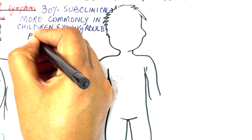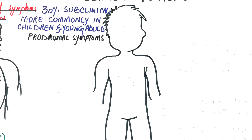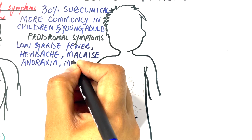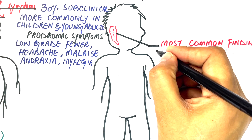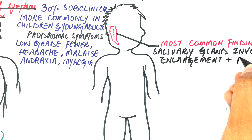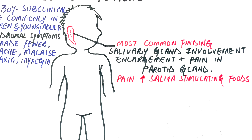The prodromal symptoms in symptomatic cases are low-grade fever, headache, malaise, and anorexia, followed within one day by significant salivary gland changes having a preference for the parotid gland. The enlargement and pain within the parotid gland peak within two to three days. The intensity of pain increases with chewing movements or eating saliva-stimulating foods. In the majority of patients, unilateral involvement of the parotid gland is common.